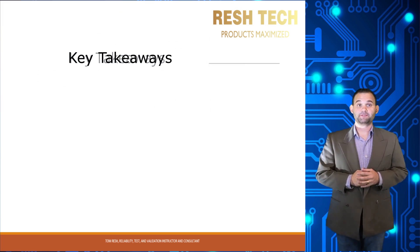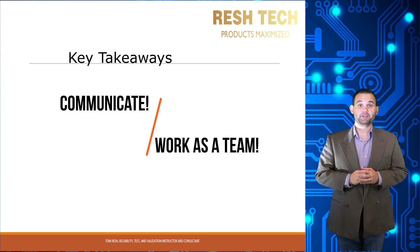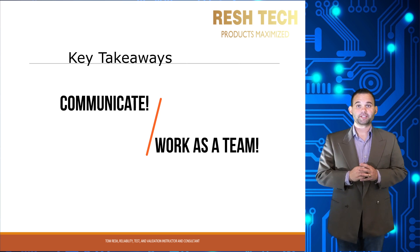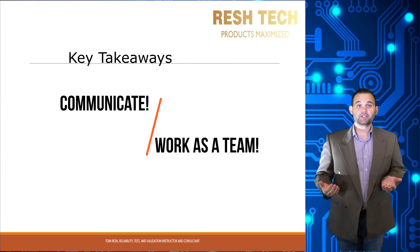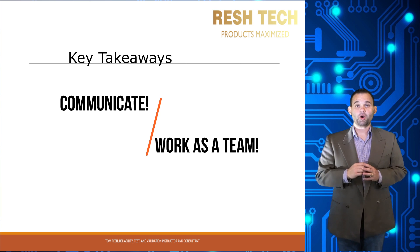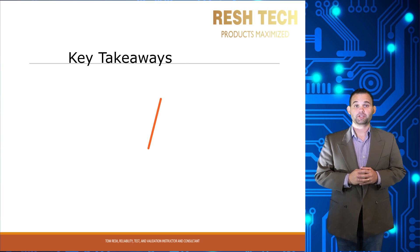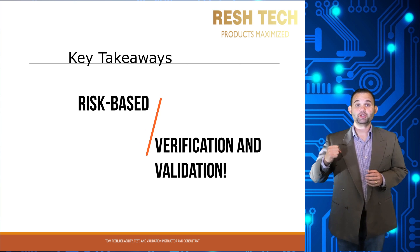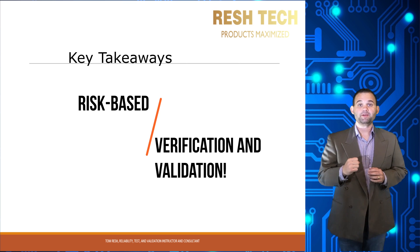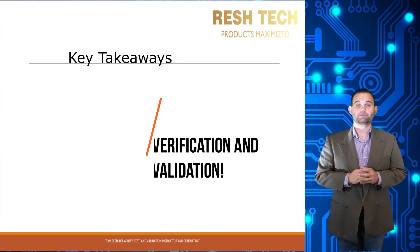Some key takeaways from this video: Communicate! Don't work in silos or keep issues under wraps until the 11th hour. All disciplines should maintain open two-way communication. Don't wait for formal meetings to talk to other teams. All teams share the same goal of building a world-class product for customers. Also, plan your verification and validation activities using a risk-based approach — use DFMEAs and PFMEAs to identify areas of highest risk priority in the design and production process.